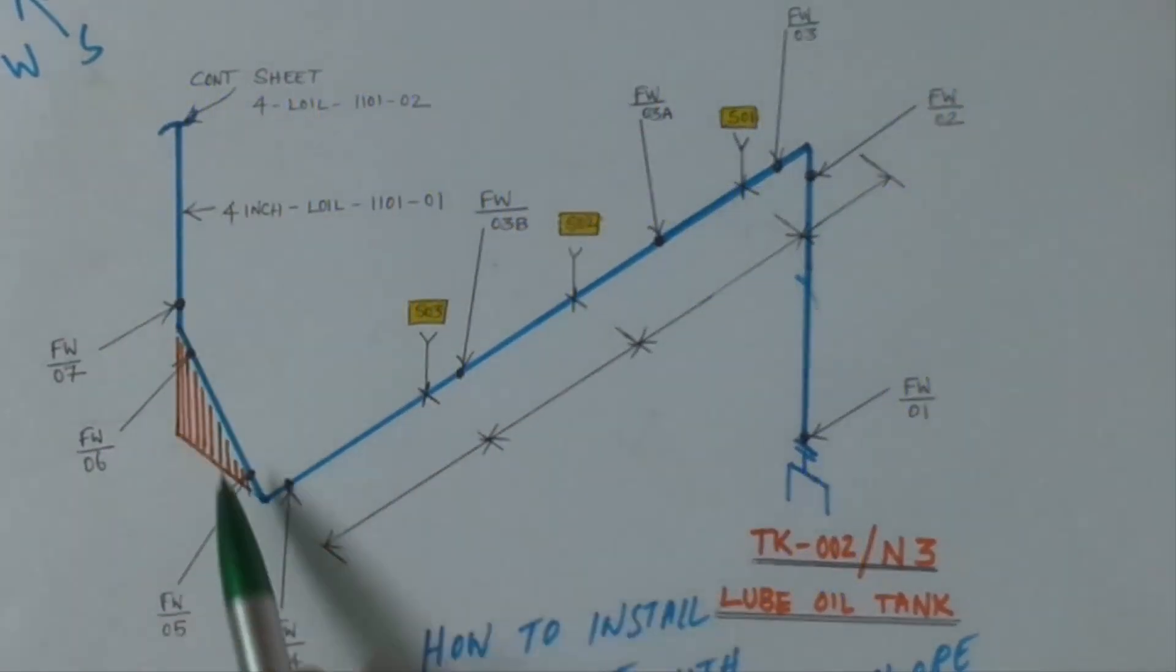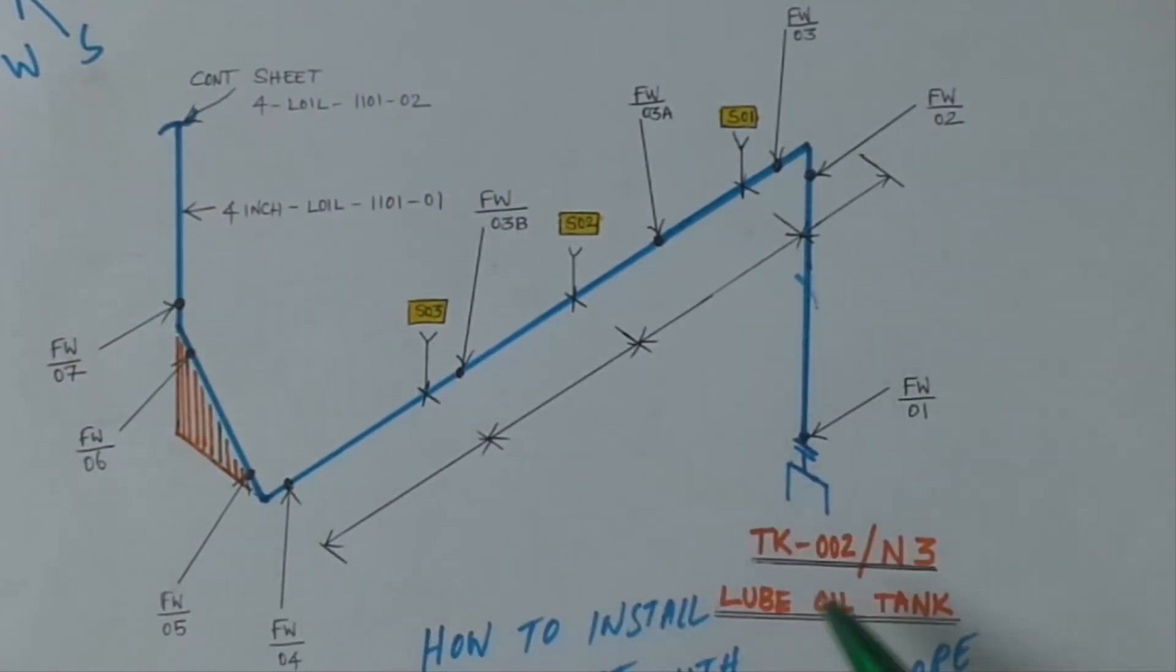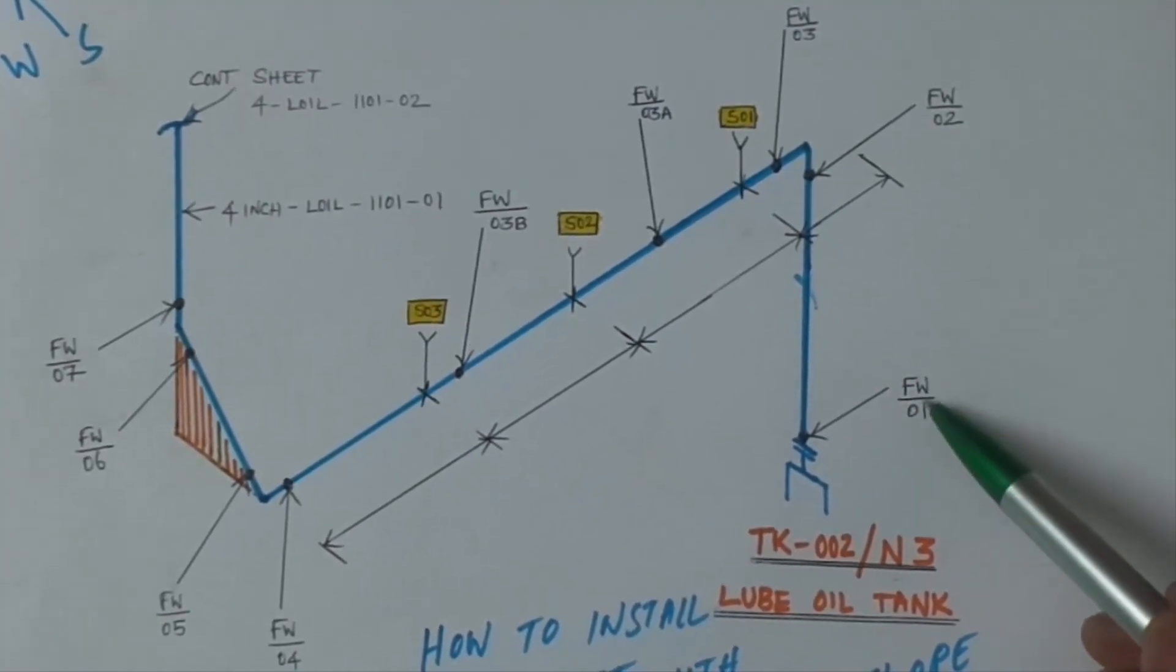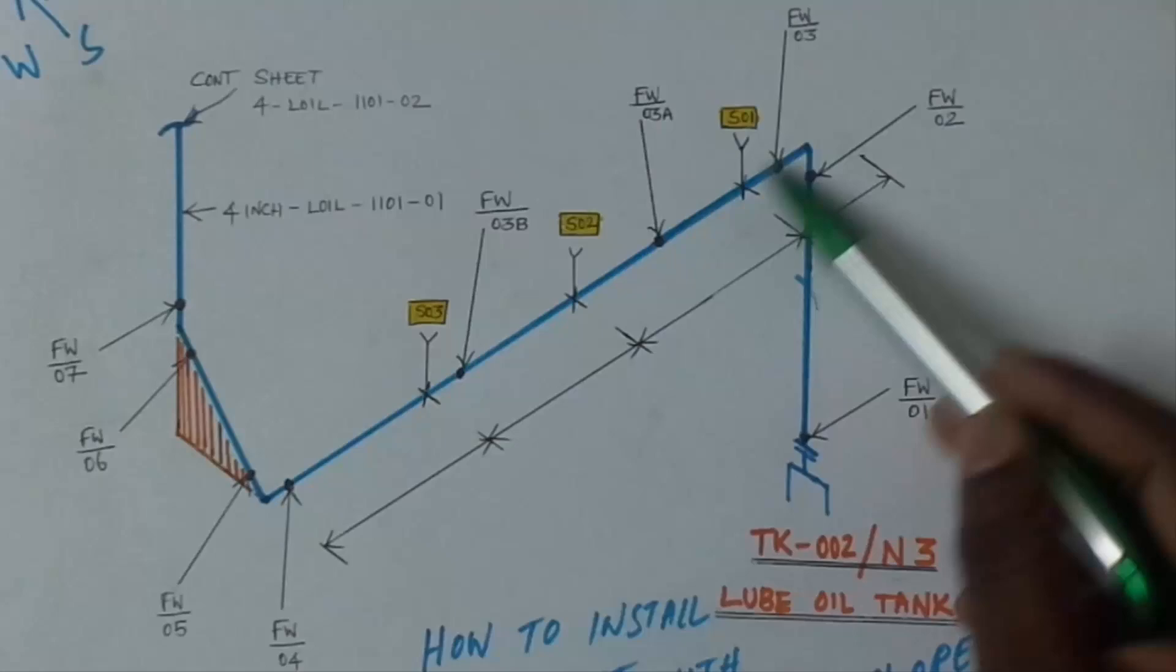This line is going to tank number TK-002, nozzle number 3. It's connected with nozzle number 3. The line is going like that.